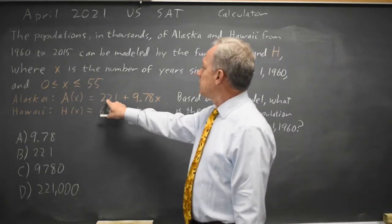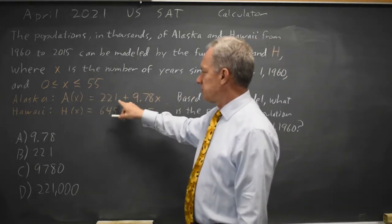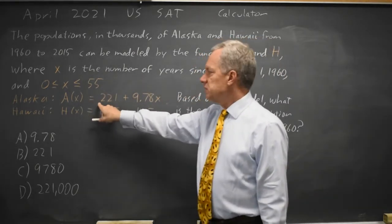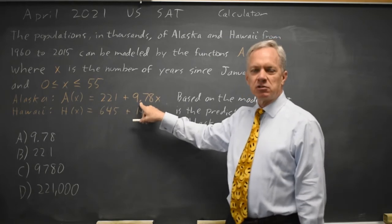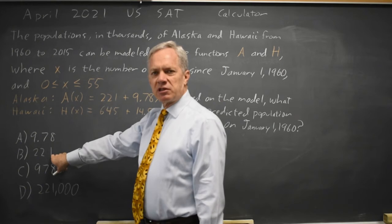Alaska is A of X. X is the number of years since January 1, 1960, so X equals 0. A of 0 is 221, plus 0 is 221. And the question says these numbers are in thousands.